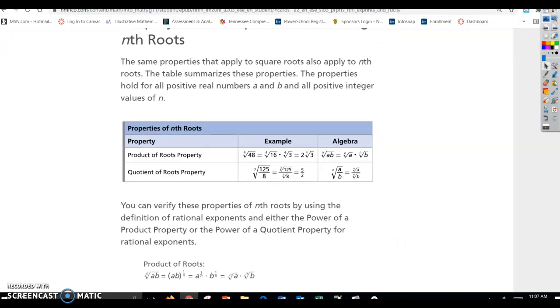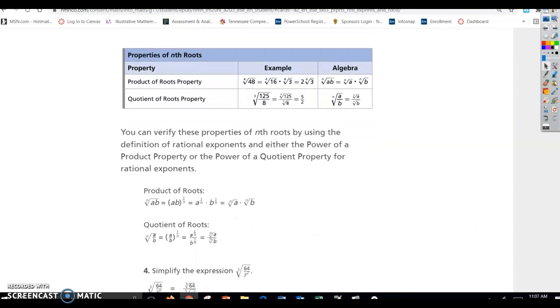So you can see the properties. We've talked about this before, but just to recap. And now we have an nth root, not a square root. So in this case, there is a 4th root of 48.